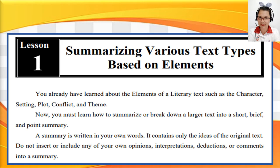You have already learned about the elements of a literary text: character, setting, plot, conflict, and theme. Now, you must learn how to summarize — to break down a larger text into a short, brief, and pointed summary. A summary is written in your own words. It contains only the ideas of the original text. Do not insert any of your own opinions, interpretations, deductions, or comments into a summary.